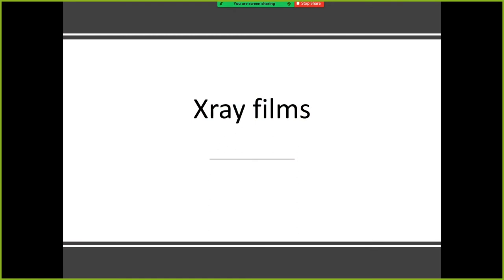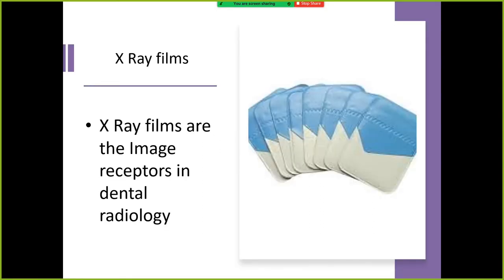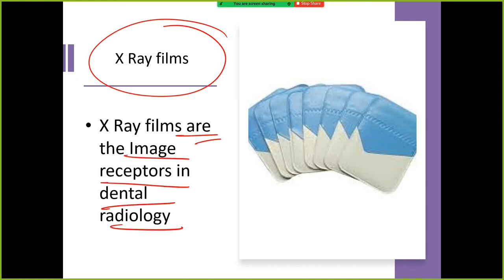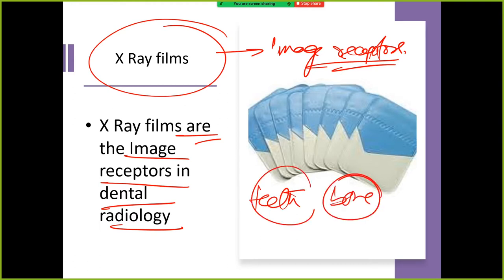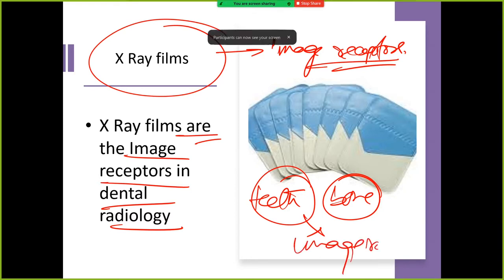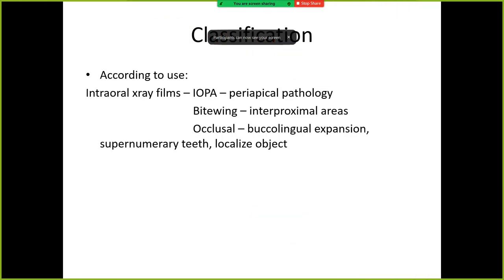The topic we are going to discuss today is x-ray films. So what are x-ray films? They are the image receptors in dental radiology. Image receptors — whatever structure we are dealing with, whether teeth or bone, they receive the image of that structure. So they are image receptors. Now, classification of x-ray films.